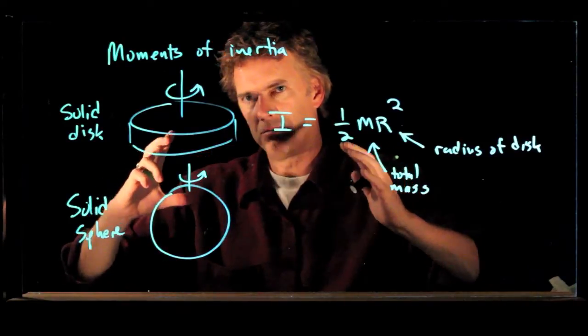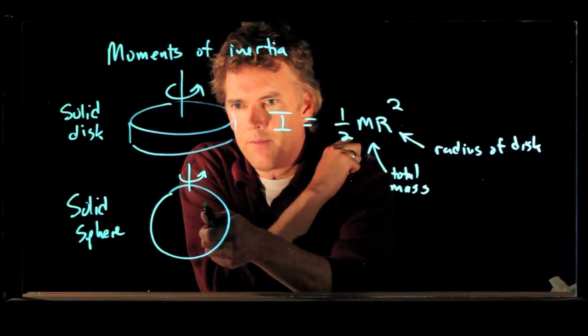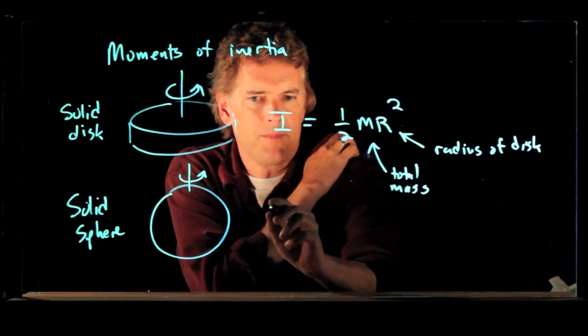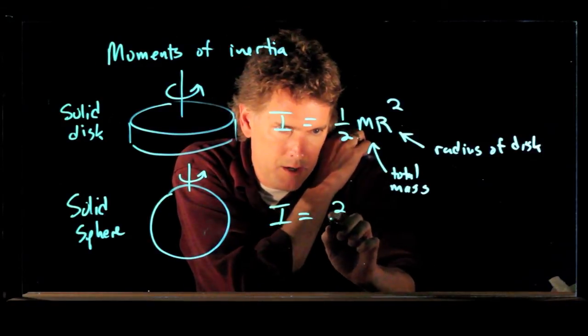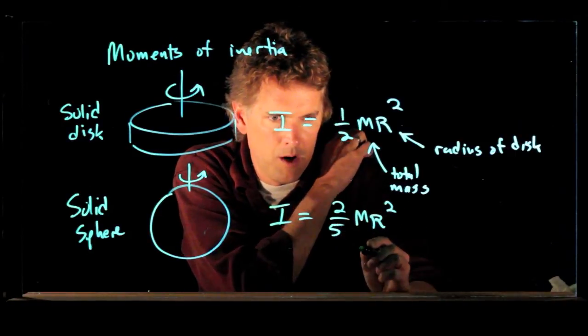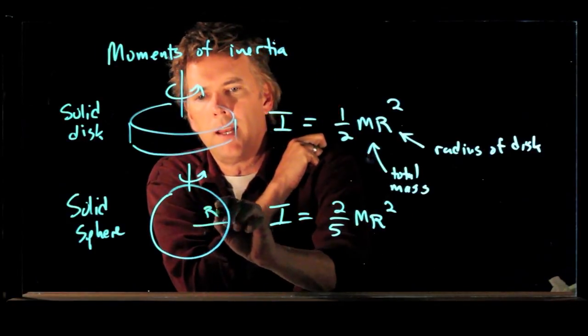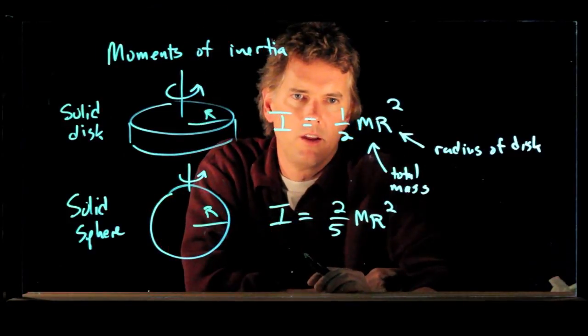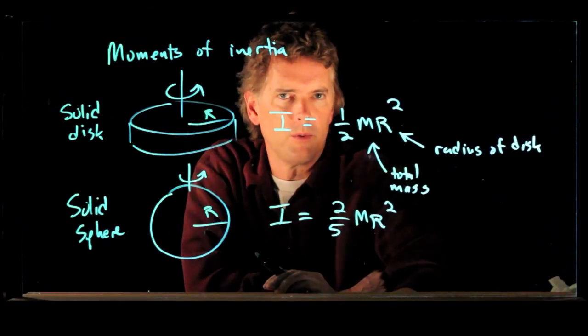Because if I smush it up on the bottom and the top, I can make a sphere out of it. And in fact, a lot of that mass is close to the axis of rotation. And so what we find is that I for a solid sphere is in fact 2 fifths m r squared, where again m is the total mass and r is the radius of the sphere, just like the radius of the disk. 2 fifths is a little bit less than 1 half. So our intuition was in fact correct.